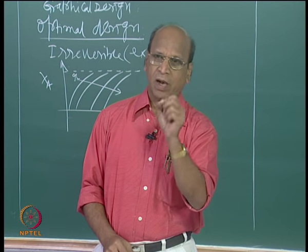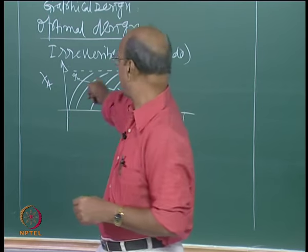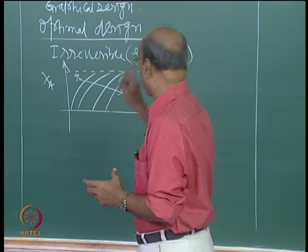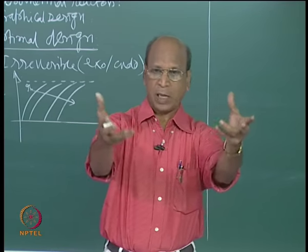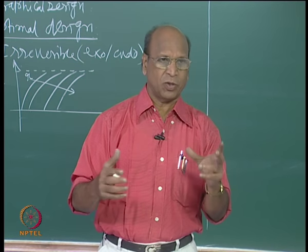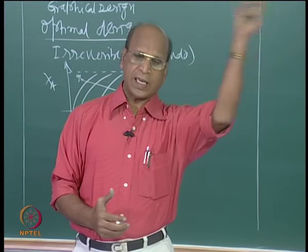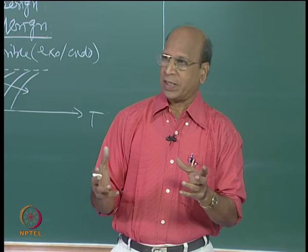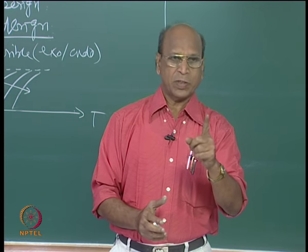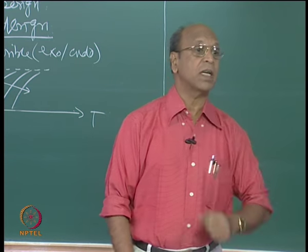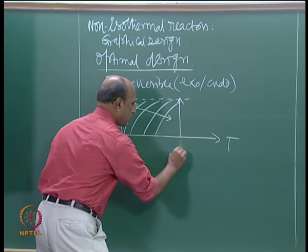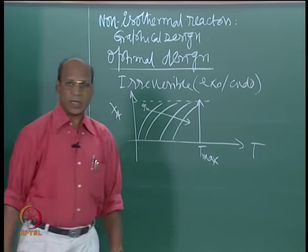We are talking about irreversible reaction. For irreversible — exothermic or endothermic — what should be the strategy? Corresponding to a particular temperature you will get the highest rate. What is the temperature and what kind of temperature scheme should I have in the reactor? Is it one temperature? You should have isothermal temperature — the highest that is possible. This is T_max. How do I decide T_max?